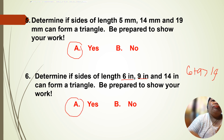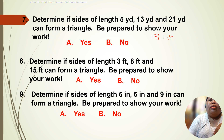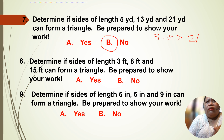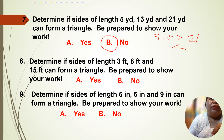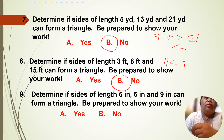For number 7, determine if sides of length 5 yards, 13 yards, and 21 yards can form a triangle. 13 plus 5 is 18, which is less than 21 — the answer is no. For number 8: sides of length 3 feet, 8 feet, and 15 feet. 3 plus 8 is 11, which is less than 15 — the answer is no. For number 9: sides 5 inches, 5 inches, and 9 inches. 5 plus 5 is 10, which is greater than 9 — the answer is yes.